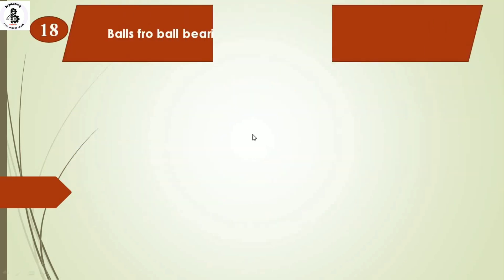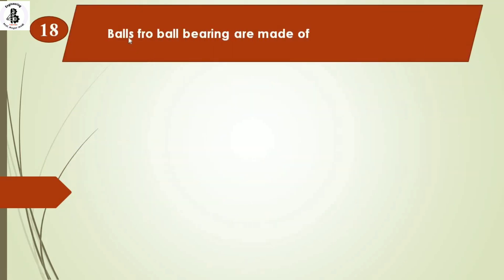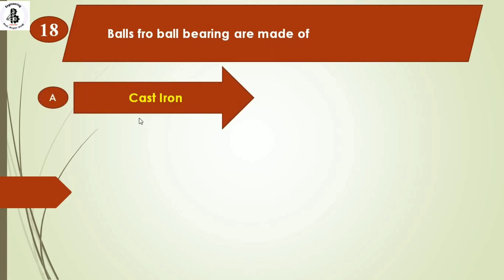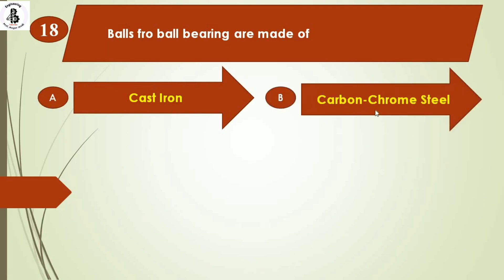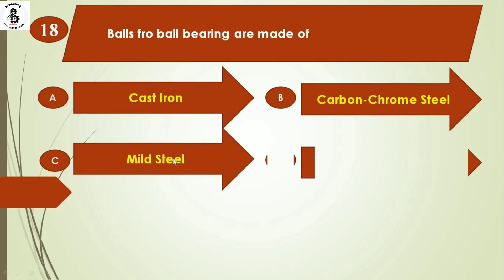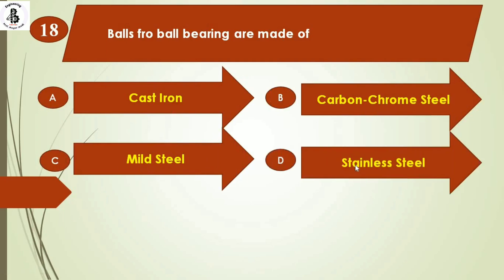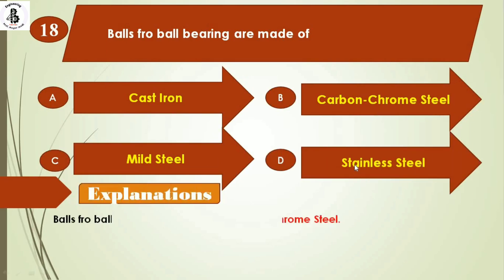The next question: balls from ball bearings are made of option A) cast iron, option B) carbon chrome steel, option C) mild steel, option D) stainless steel. Balls from ball bearings are made of carbon chrome steel. The right answer is option B.